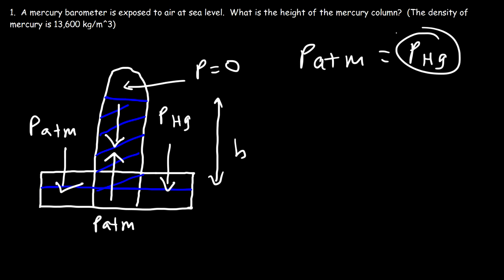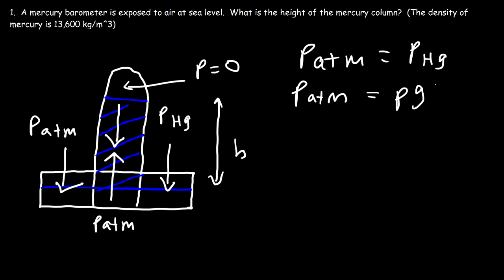Let's set the pressure of the atmosphere equal to the pressure created by the weight of the mercury column. The pressure due to the weight of a substance equals density times gravity times height — rho times g times h. This equation is derived in another video on pressure and fluids, and there's also one on absolute pressure and gauge pressure if you want to see how to derive it.